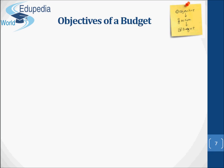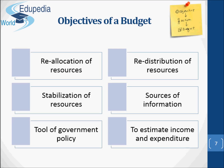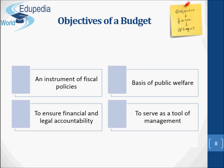What are the objectives of a budget? Budget is an important tool of financial administration and an effective means of enforcing fiscal policies. The main objectives are: reallocation of resources, redistribution of resources, stabilization of resources, serving as a source of information to the public on past, present and future activities, plans and programs of the relevant governments, acting as a tool of government policy, estimating income and expenditure, serving as an instrument of fiscal policies, forming the basis of public welfare, ensuring financial and legal accountability, and serving as a tool of management for controlling administrative efficiency.